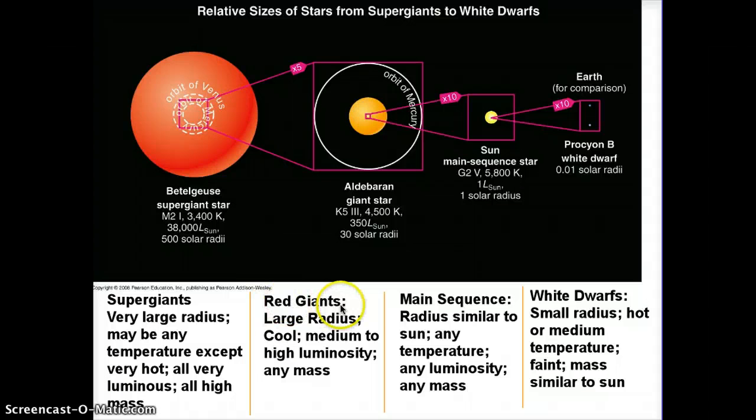Red giants. Well, again, they're going to be large radius, not as big as a supergiant, but still large. They are red, which means they're all cool. They're all on the right side of the HR diagram. And their luminosity is sort of medium to high, and it turns out a red giant can have any mass you want, all different kinds of masses.